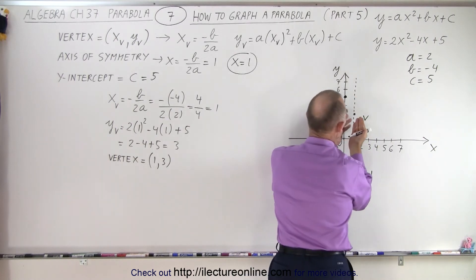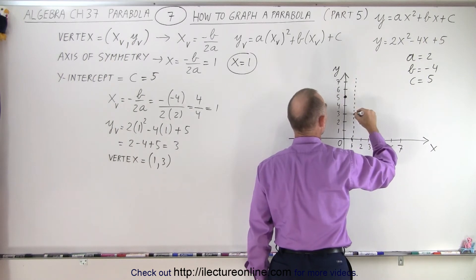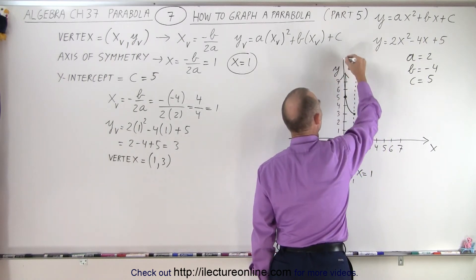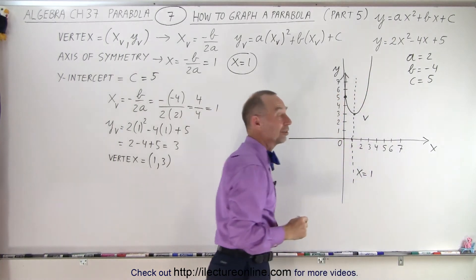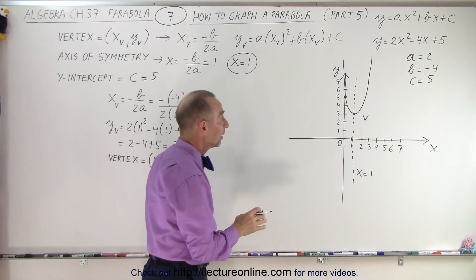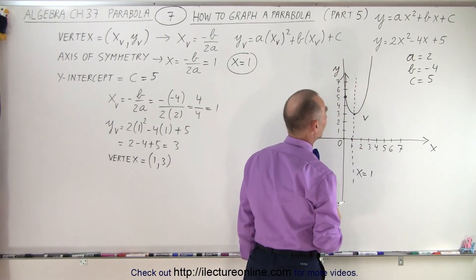So here's the vertex, we know it opens upward, and we know that the graph will go to that point right here. So it looks like, there you go, in one direction, and then we draw the mirror image in the other direction. And there's the parabola that represents the graph y equals 2x squared minus 4x plus 5.